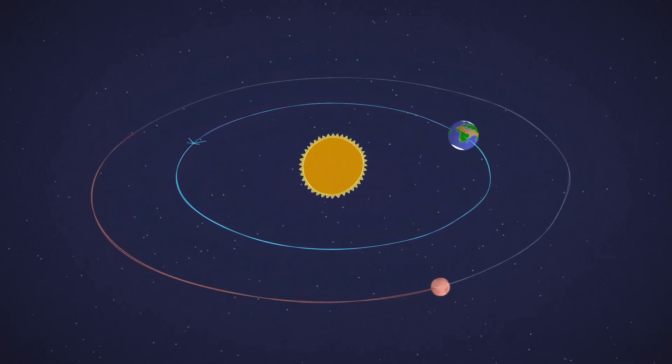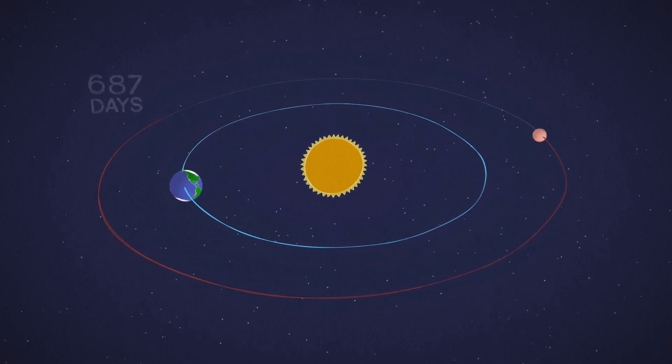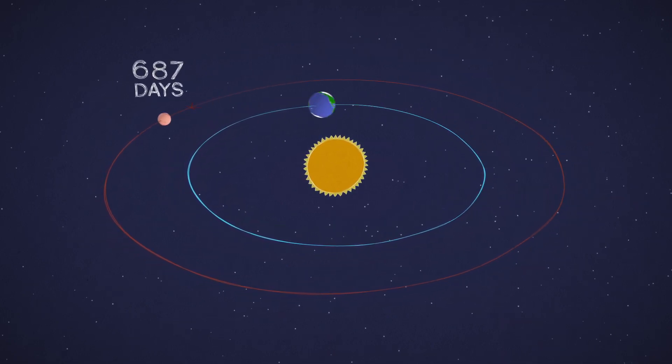Mars is a little slower and farther from the Sun, so a full circuit takes 687 Earth days, or one Mars year.